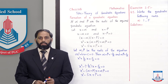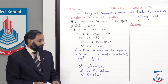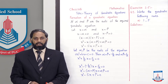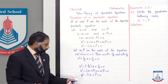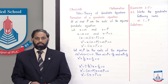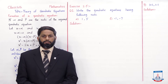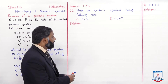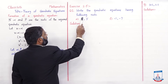So students, when roots are given, we find the sum of roots — letting one root be alpha and the other beta — find alpha + beta, find alpha·beta product, and put them into this equation to get the required quadratic equation. Now let's start Exercise 2.5. Question number 1 is: write the quadratic equations having the following roots.